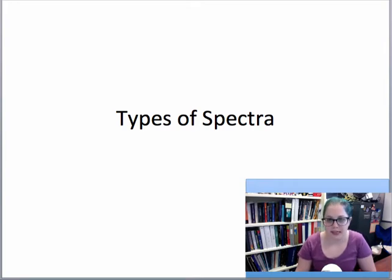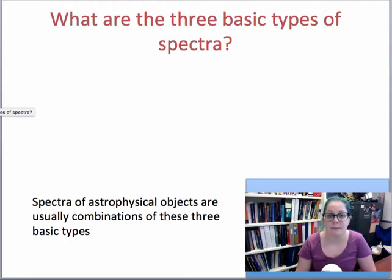I showed you a little bit of that in the last video. We're going to talk about the different types of spectra that can be produced, specifically three basic types of spectra, which are used in a combination, or a combination of these three types are used all throughout astronomy for understanding what things are made of in the universe.